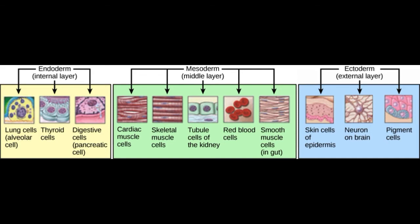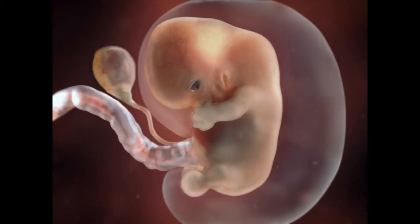During the embryo stage, you start to see eyes, jaws, arms, and legs forming. The brain and nervous system are developing quickly, and the heart has been beating for a month. The umbilical cord is in place, and the baby is in its amniotic fluid sac.